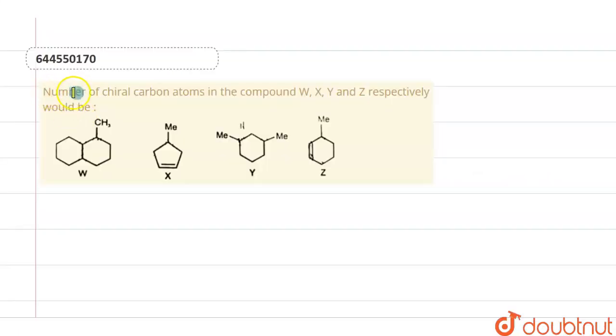Hi everyone, so today's question is: number of chiral carbon atoms in the compound W, X, Y, and Z respectively would be.